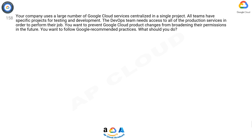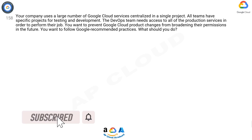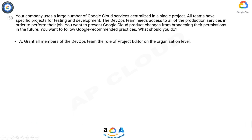Question 158. Your company uses a large number of Google Cloud services centralized in a single project. All teams have specific projects for testing and development. The DevOps team needs access to all of the production services in order to perform their job. You want to prevent Google Cloud product changes from broadening their permissions in the future.